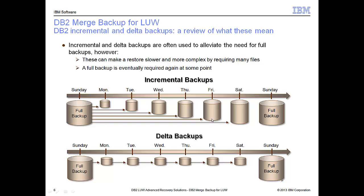But incrementals take up more space since much of the data on the intervening incremental delta backups is redundant — for example, Friday contains everything that Thursday, Wednesday, Tuesday, and Monday has. Some choose delta to be very efficient in space storage, but that means the restore point involves more files, which takes more time to process and requires you to keep track of all those files.